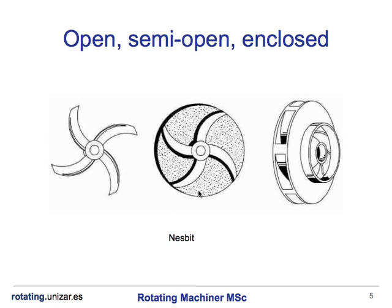The semi-open impeller has a circular plate attached to one side of the blades. And finally, the enclosed impeller, also known as the shrouded impeller, has one circular plate attached to each side.